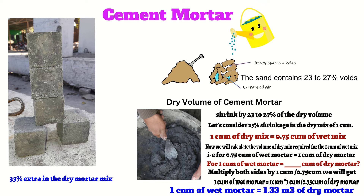This is how the 1.33 factor is derived for cement mortar to get the dry mix volume. For more information related to this topic, please refer to Part 1 of this video. Thanks for watching — see you in the next video.